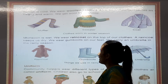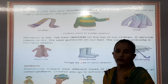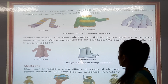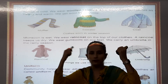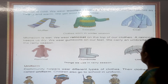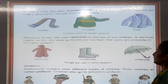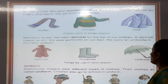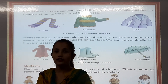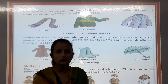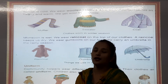Monsoon is wet. We wear raincoat on top of our clothes. Monsoon मतलब rainy season — we wear raincoat and gum boots. A raincoat keeps us dry. We wear gum boots on our feet and carry an umbrella in the rainy season. In monsoon season we wear raincoat, gum boots and carry an umbrella.